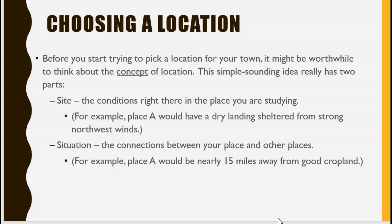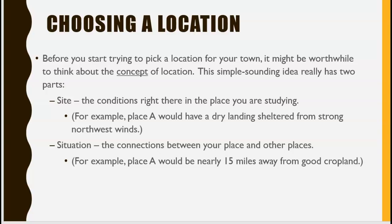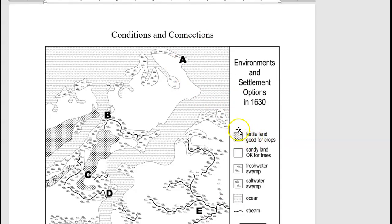This simple sounding idea really has two parts. The site — the conditions right there in the place you're studying. For example, place A would have a dry landing sheltered from strong northwest winds. Place A would also be nearly 15 miles away from good cropland. Here you can see where the cropland — fertile for good crops — is located, all the way down here.